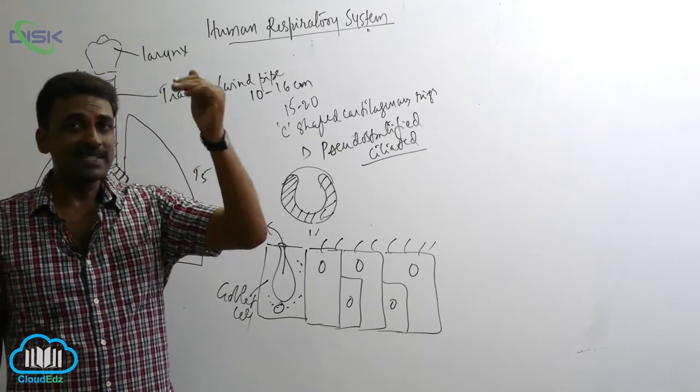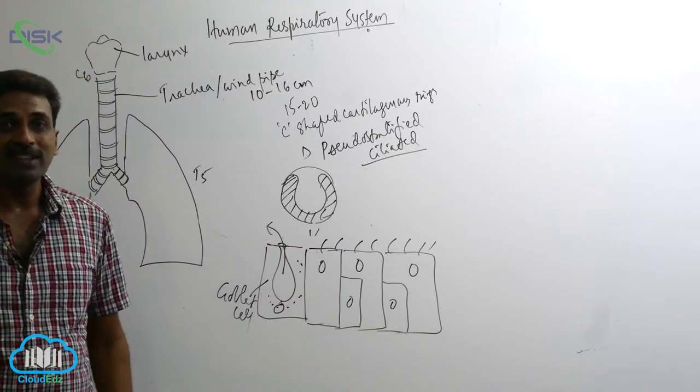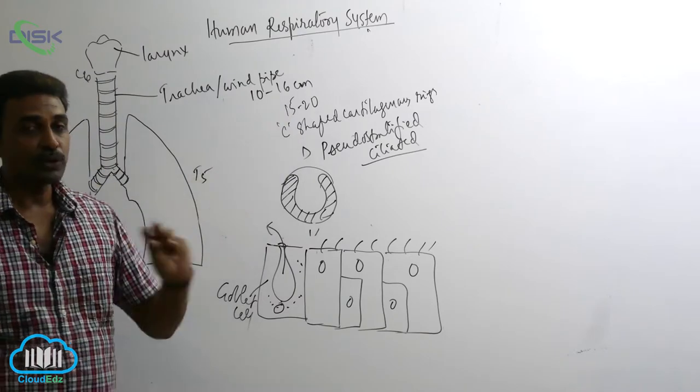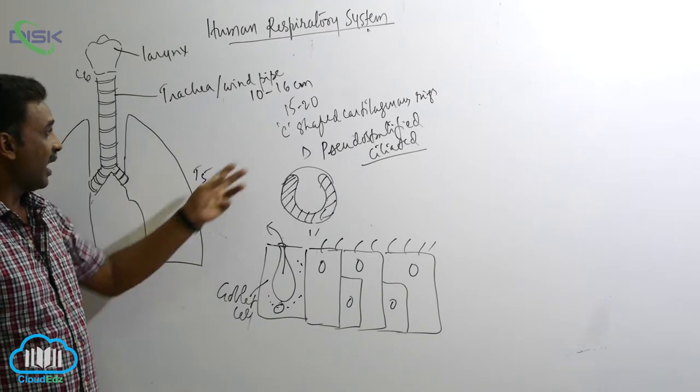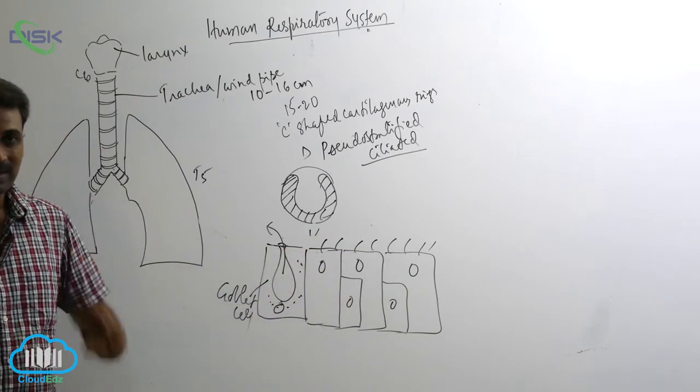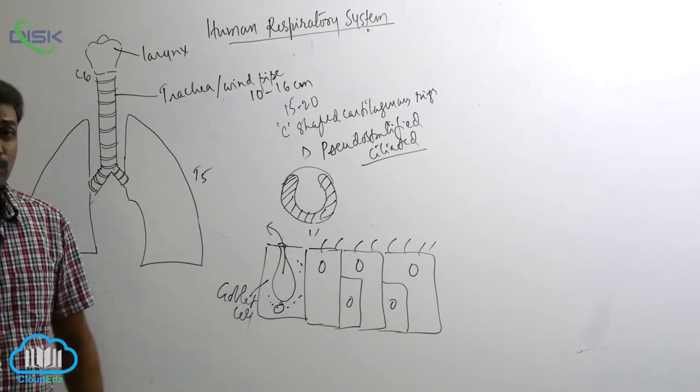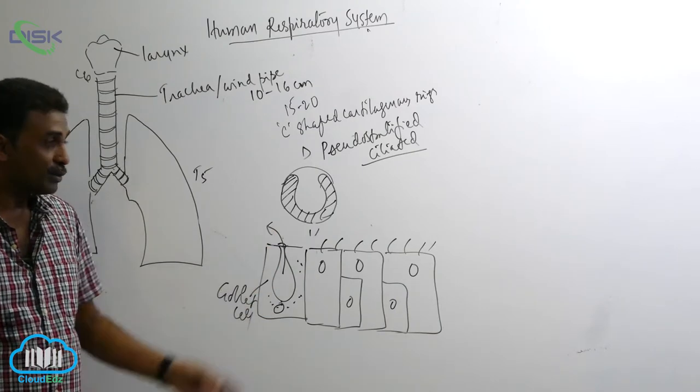So trachea extends from C6 to T5. It is around 10 to 16 centimeters in length. And it is supported by 15 to 20 C shaped cartilaginous rings made up of hyaline cartilage. And inside it is lined by pseudo stratified ciliated epithelium. And some of the cells they produce mucus.